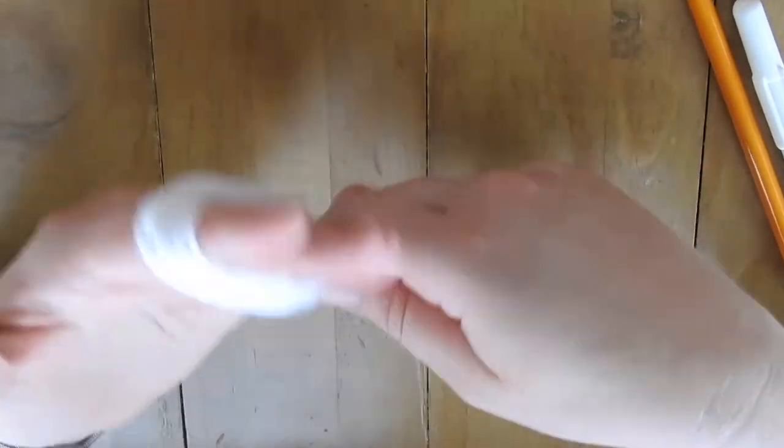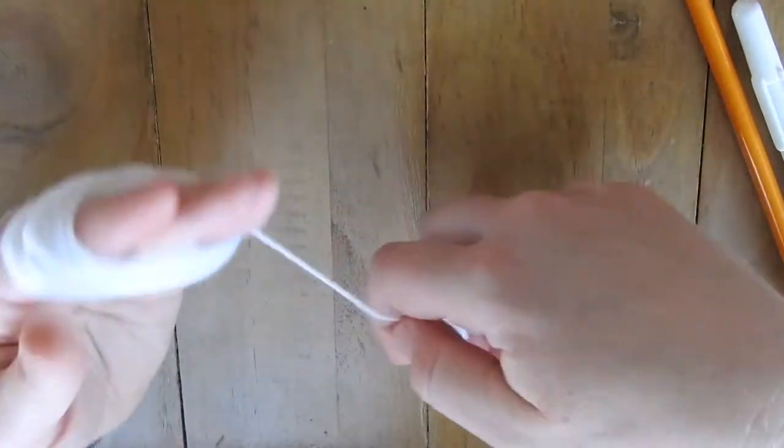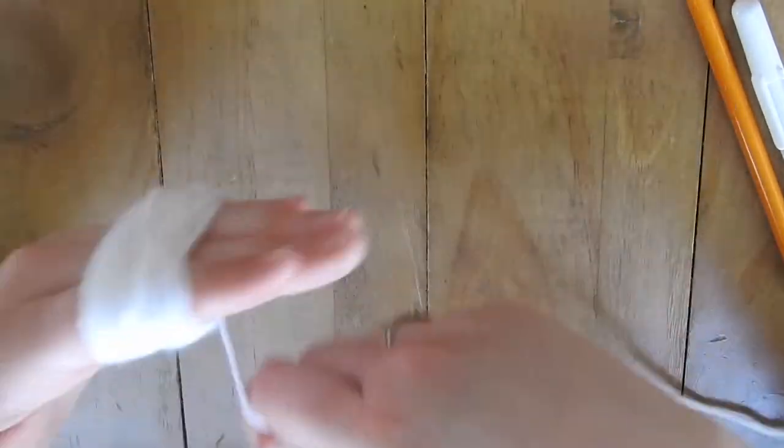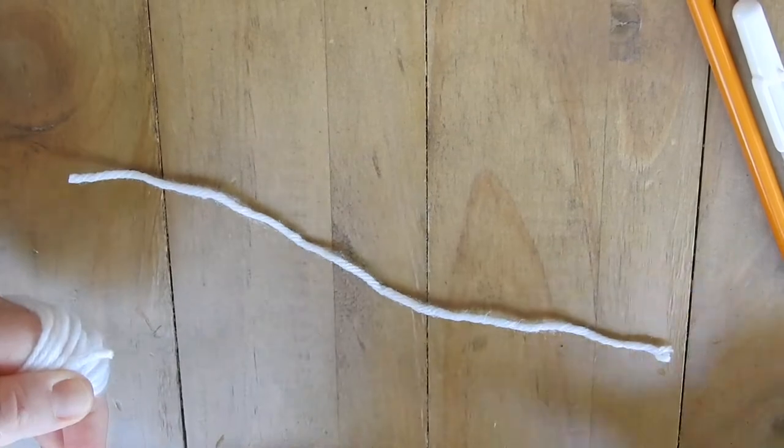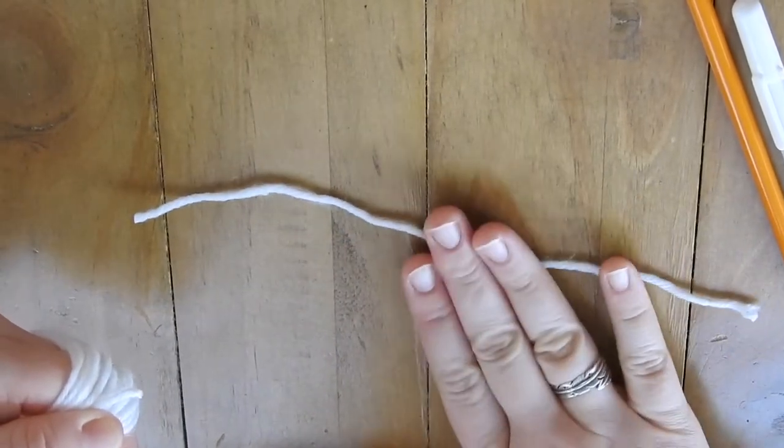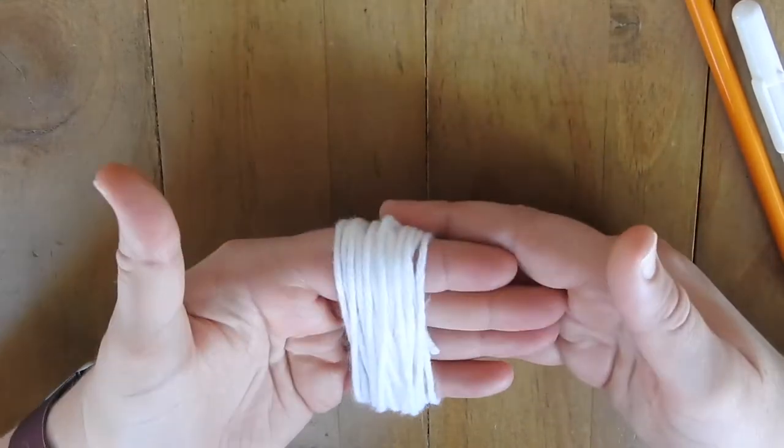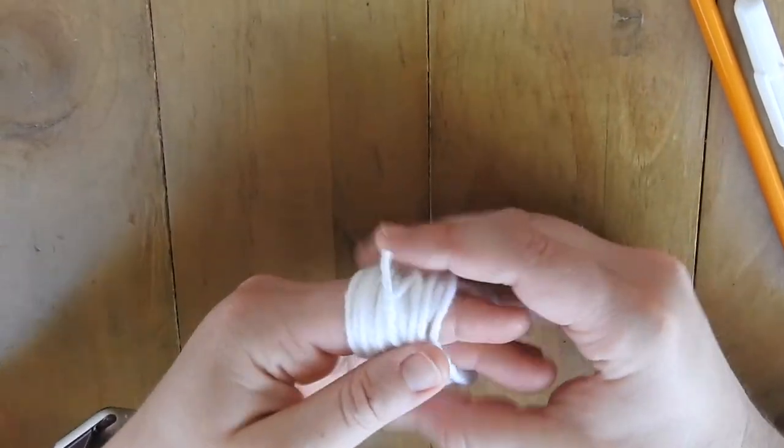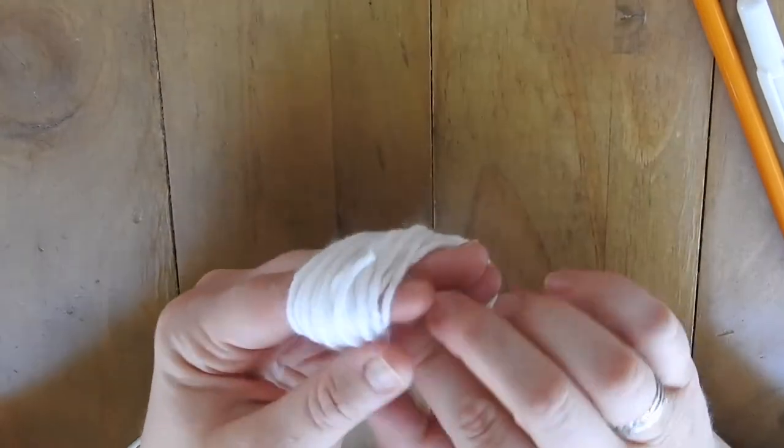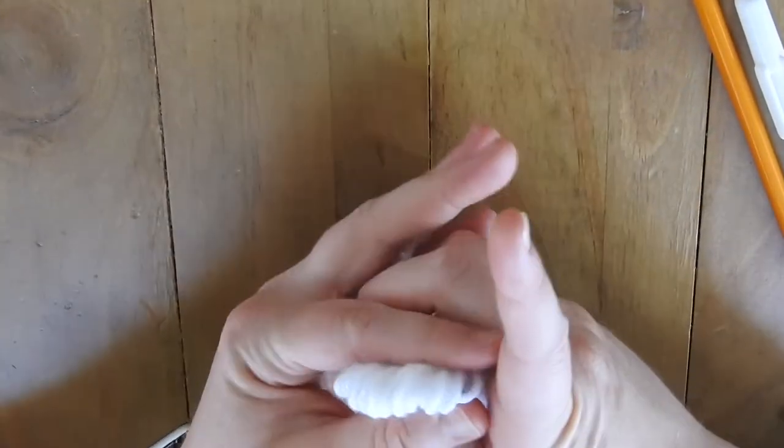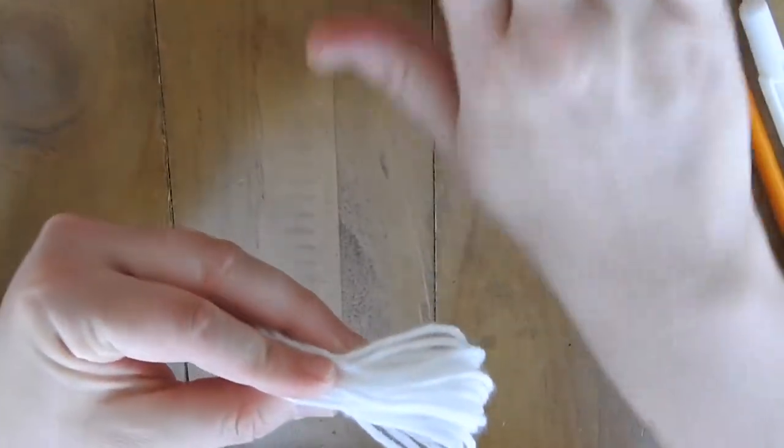Now you're going to want to go ahead and cut the yarn, leaving this little nice tail of yarn here that we're going to use in just a second. I'm going to pull it off my fingers carefully - you want to keep them wrapped up. Now we're going to grab that piece of yarn that we just cut away, lay it down, lay our wrapped yarn over it.